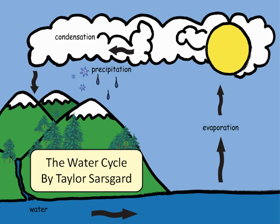Hi, my name is Taylor Sarsgaard and I chose the water cycle as my research topic. Since I'm an early childhood education major, I wanted to find a topic that elementary students would learn about. In third or fourth grade, I remember learning about the water cycle and I thought it was interesting, especially because of the diagrams that are associated with it.